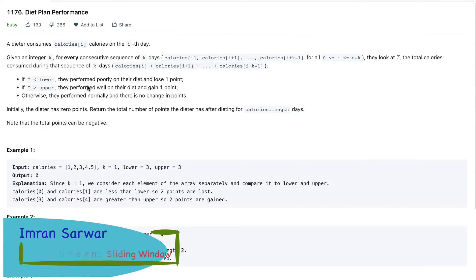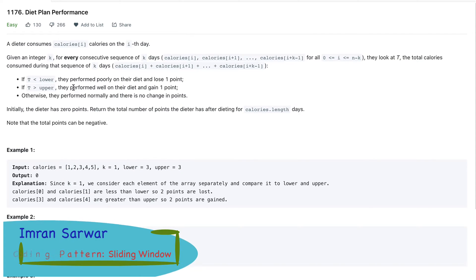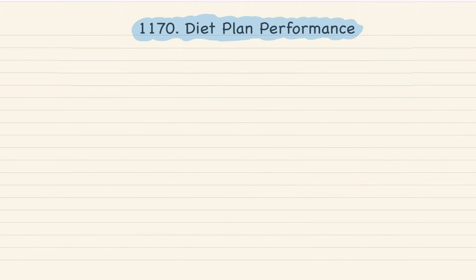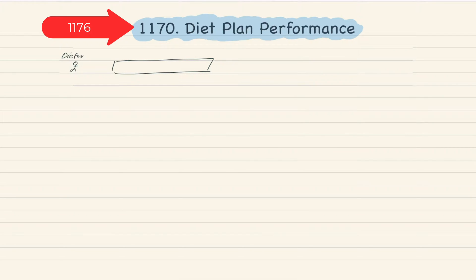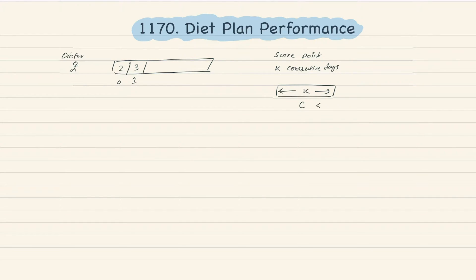Hi, hello! Today we'll talk about another sliding window question. This question is 'Diet Plan Performance.' A dieter consumes calories every day — suppose on day zero he consumes two calories, three on the first day, and so on. On k consecutive days, if the consumed calories are less than the lower limit, we give him minus one. If greater than the upper limit, we give him plus one. If within the range, we give him zero points.